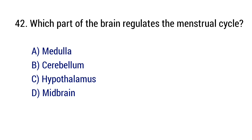Question number 42. Which part of the brain regulates the menstrual cycle? The right answer is option C: Hypothalamus.